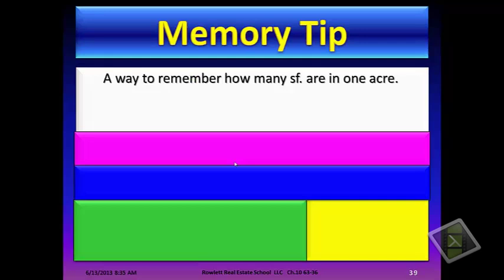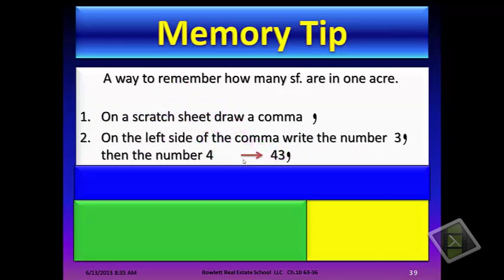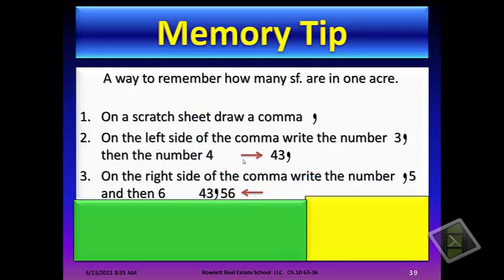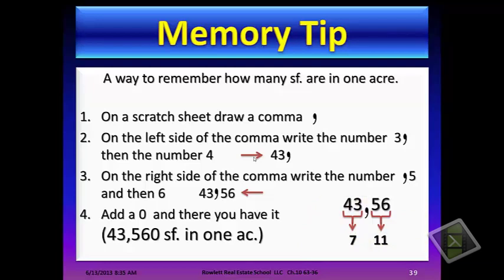Here's a memory tip on how to remember how many square feet are in one acre. On a scratch sheet, draw a comma. On the left side of the comma, write the number 3, then move further to the left and write the number 4 — so that gives us 43,000. On the right-hand side of the comma, write the number 5, then 6, then add a zero, and there you have it: 43,560 square feet in one acre. You will have to memorize that. You can check yourself with the 4-3-5-6, and everybody can remember 7-11. You need to know this on the state test.